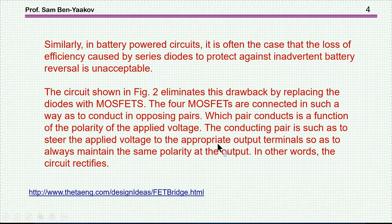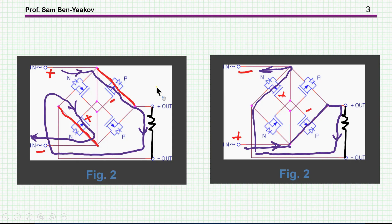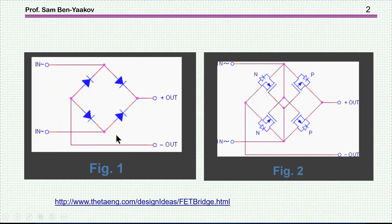There is a passage here that I've copied from this website, which is very nice, actually explaining the operation of the circuit, and it says, similarly in a battery-powered circuit, it is often the case that the loss of the efficiency cost with a series diode to protect against inadvertently battery reversal is unacceptable. That is for a particular application in which you use the diode bridge for protection against reversal of input voltage.